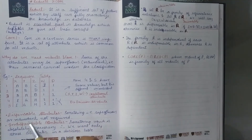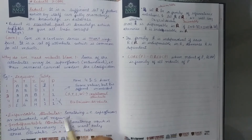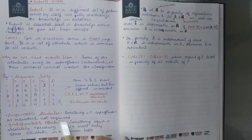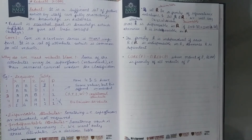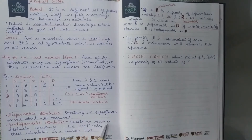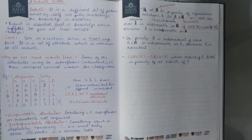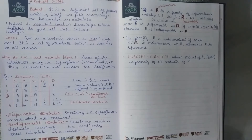Now, another concept is Dispensable Attributes. Dispensable attributes are superfluous — meaning redundant or not required. Indispensable attributes, on the other hand, are necessary attributes. Therefore, we only want the indispensable attributes in our decision table.